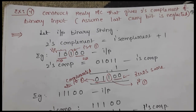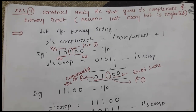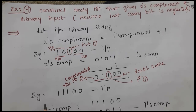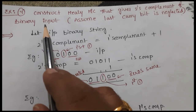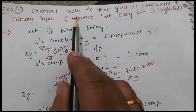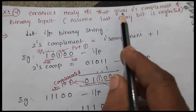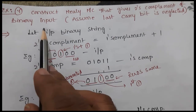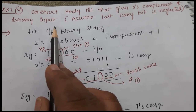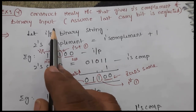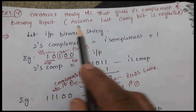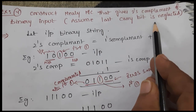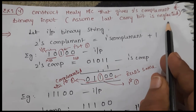Hi everyone. Let us see one more example on Mealy FSM. The problem is to construct a Mealy machine that gives the 2's complement of a binary input string. Assume the last carry bit is neglected.